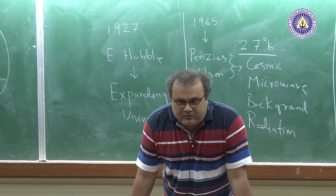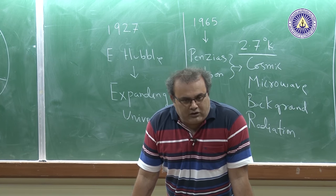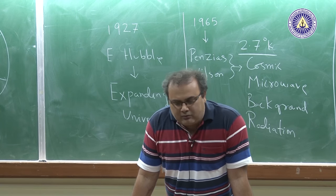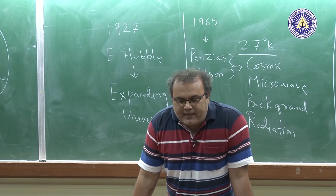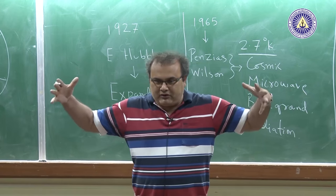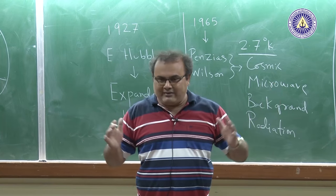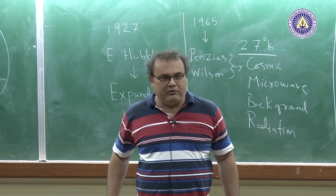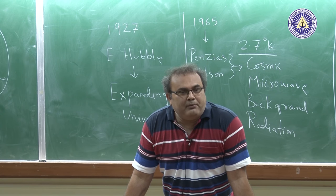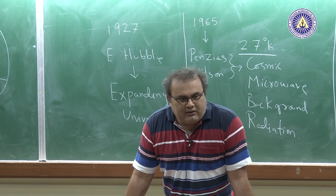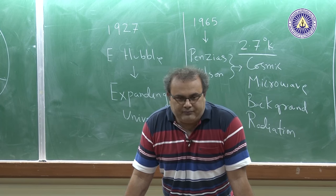Albert Einstein then understood there was something gravely wrong in his understanding. He had believed the universe was static, but observations showed it was not. The cosmological constant — which had provided an anti-gravitational effect — was rejected by Einstein in 1927, and other theories for the expanding universe were developed.